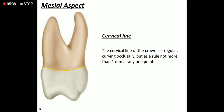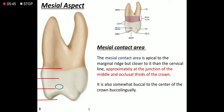The cervical line shows a curvature in the occlusal direction, and by rule the curvature is not more than 1 mm. The mesial contact area lies somewhere apical to the mesial marginal ridge.